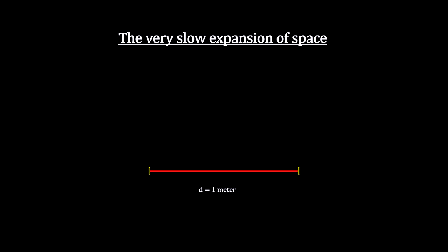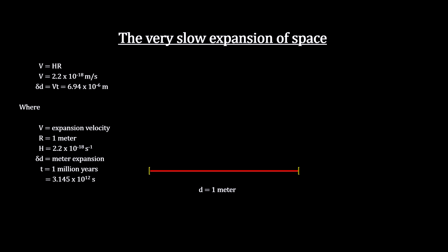The real expansion is very slow. If we take a look at what the expansion does to one meter, we see that it would take a million years to expand by just seven millionths of a meter. That's way too slow to ever notice or even measure in a lab in a lifetime. And it is why it's so easy to overcome it with local gravity out to the Andromeda galaxy.